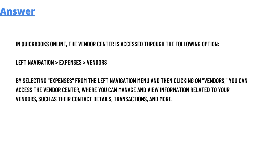The correct answer is: in QuickBooks Online, the vendor center is accessed through the following option — go to left navigation, then expenses, then vendors. By selecting expenses from the left navigation menu and then clicking on vendors, you can access the vendor center where you can manage and view information related to your vendors, such as their contact details, transactions, and more.